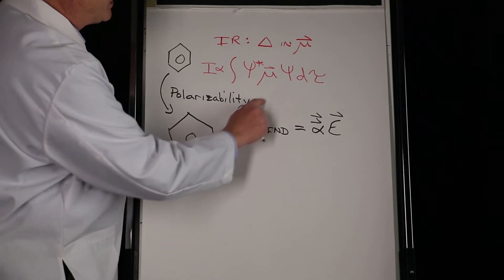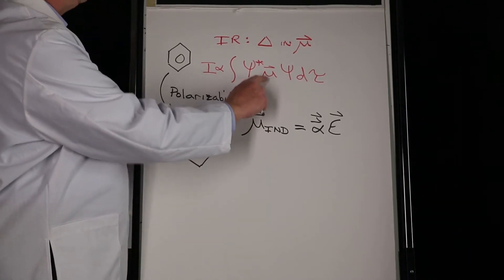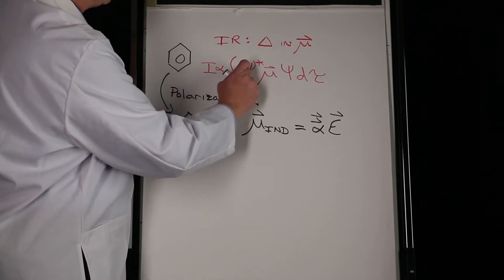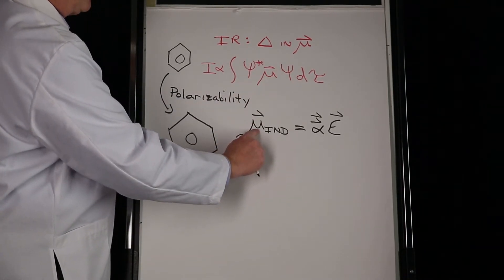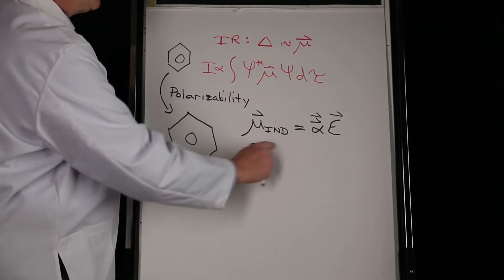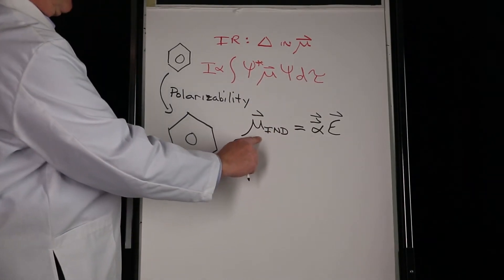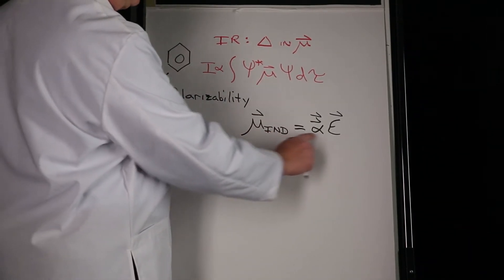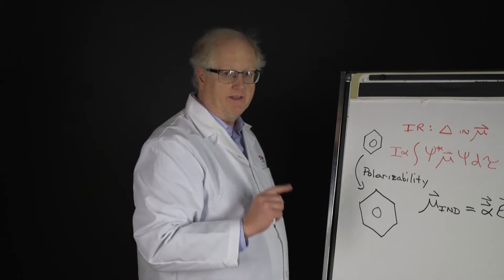Here you have the induced dipole, which feeds into the same equation: ∫ψ*μ_induced ψ for Raman. If μ_induced changes, you see Raman scatter, and that induced dipole is caused by α·E.